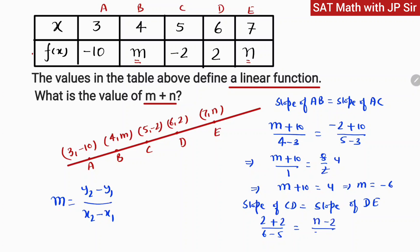n minus 2. So this gives us 4 equals n minus 2, means n equals 6. So m is minus 6.